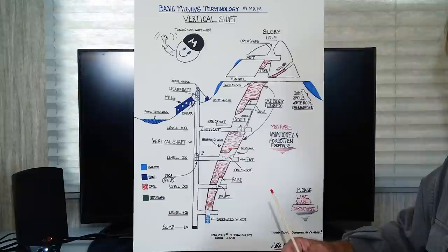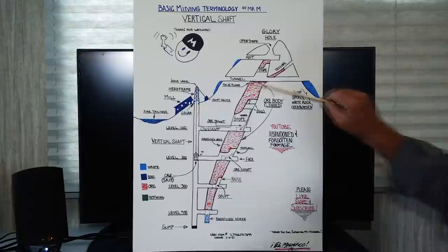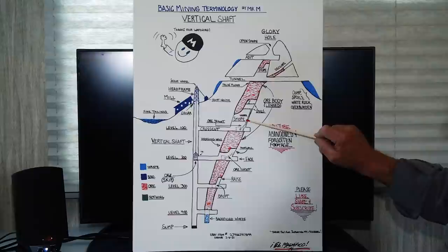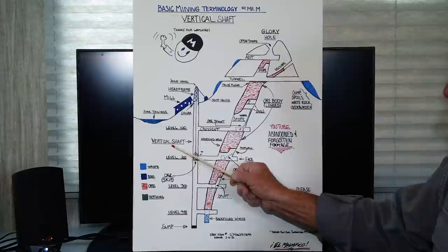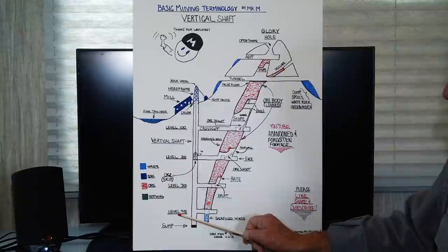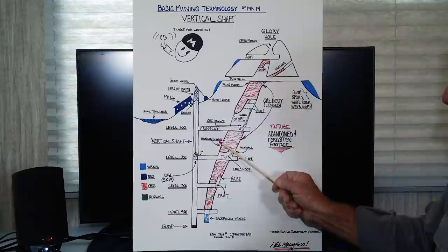Anyway, here's what we've got: open stope, addit, tunnel, stope, stope, decline, false floor, stulls, stulls, ore body, stope, ladder, ore shoot, foot wall, hanging wall, collar, head frame, sheave wheel, vertical shaft, level 100, level 200, level 300, level 400, backfilled, winze, sump, drift, drift, drift, raise, ore chute, foot wall, face, face, hanging wall, cross cut, ore shoot, stope, ladder, drift.